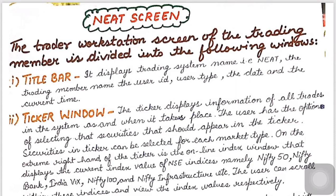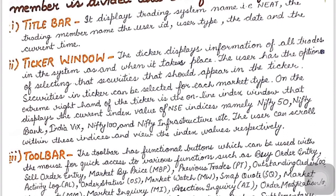Then comes the ticker window. The ticker window shows information related to trades which are in the system and which have been executed. The user has the option to select securities which appear in the ticker, and for each selected security we can select the market type.